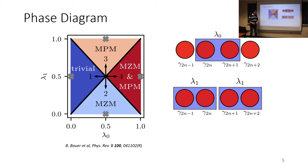The trivial phase has no edge modes. MZM right there refers to Majorana 0 edge modes. MPM refers to Majorana Pi edge modes. MZM and MPM have both. And in the braiding protocol, we circulate between all four phases.